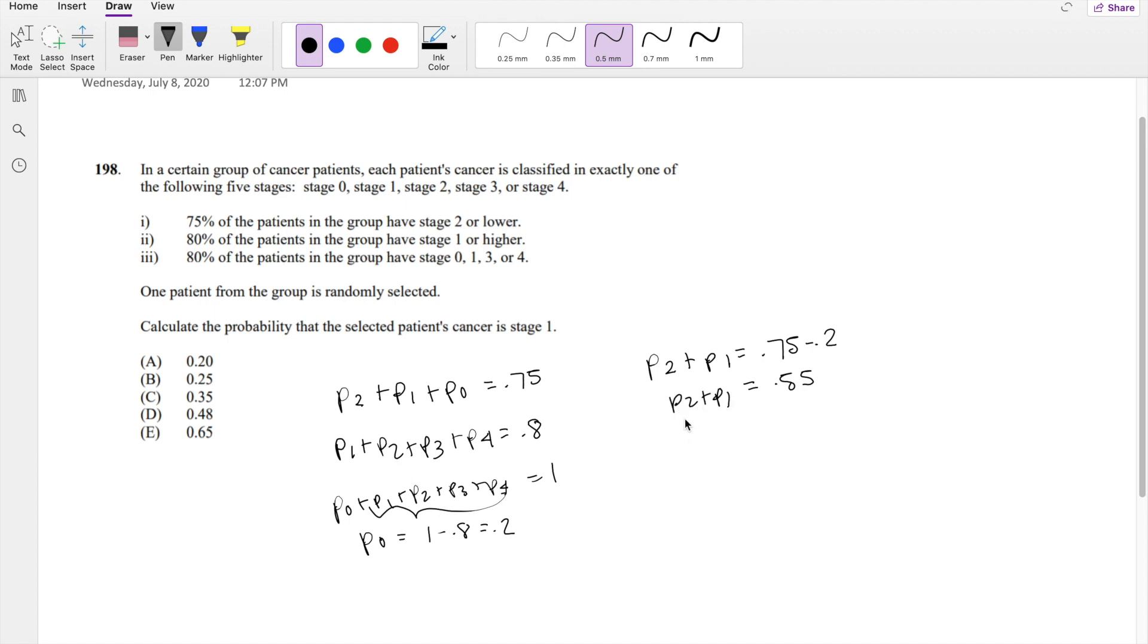If we know that a patient is in stage 2 or stage 1 with a probability of 0.55, we can put that in here. So we know that a patient is in stage 3 or stage 4 with a probability of 0.8 minus 0.55, which is equal to 0.25.